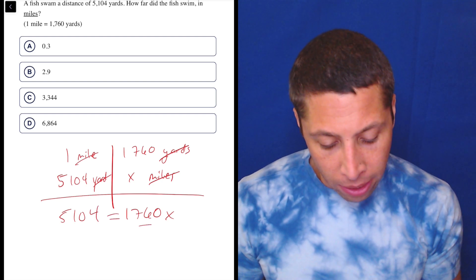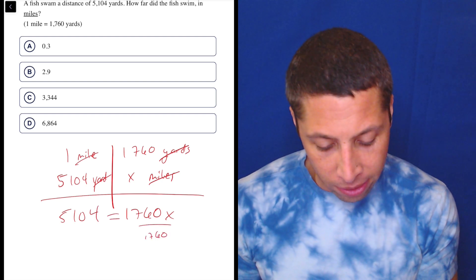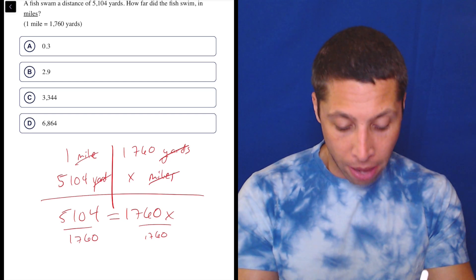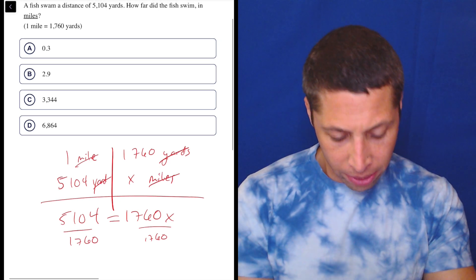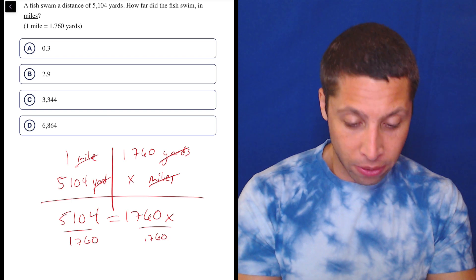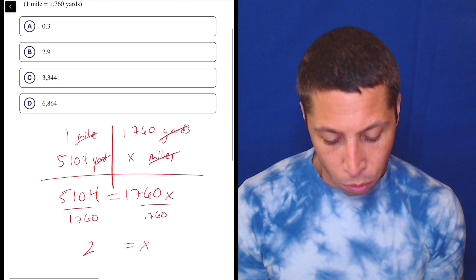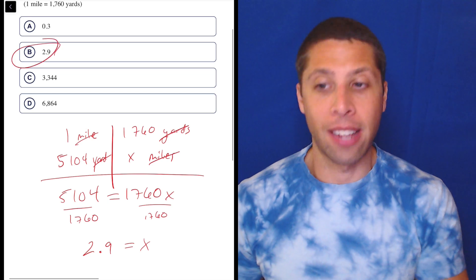Put an equal sign between it. Let's divide by 1,760. And 5,104, is that right? Okay. Divided by 1,760 is X equals 2.9. That's the answer. Done.